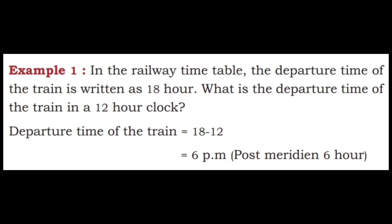Example 1: In the railway timetable, the departure time of the train is written as 18 hours. What is the departure time of the train in a 12-hour clock? Departure time: 18 minus 12 equals 6 PM — post meridian 6 hours. So the train departs at evening 6 o'clock.